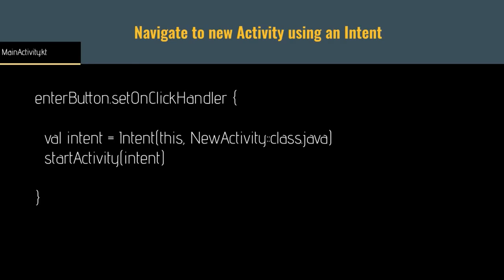How do we navigate to this new activity using an intent? In a button click handler, we first create a new intent variable — a new instance of the Intent class. The constructor takes a context, so we pass 'this' to reference MainActivity, then pass the activity we want to navigate to. We specify the fully qualified class name using the syntax NewActivity::class.java — special syntax typically used when working with activities. Once the intent is defined, we navigate by calling startActivity.